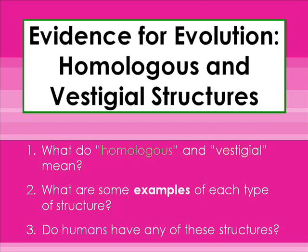There is a lot of evidence for the theory of evolution — things like fossils and asteroid impact sites. But two of my very favorite pieces of evidence for evolution would be homologous and vestigial structures, and I'd like to share some of those with you.